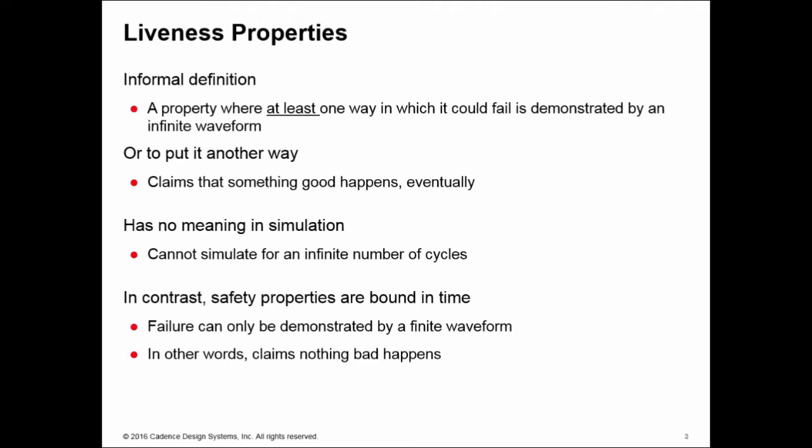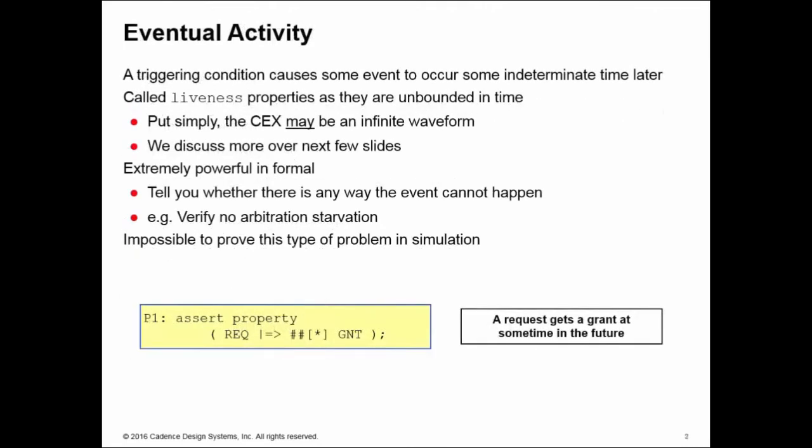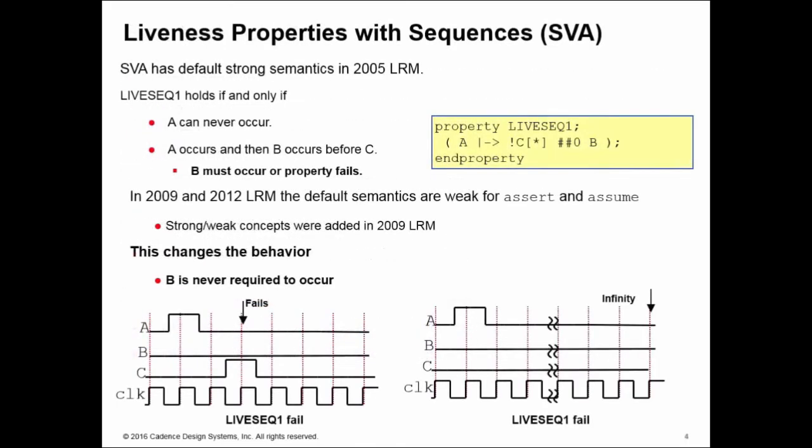The previous example we saw with a request, regarding the explanation of liveness and safety, is a bit too simplistic because it's just a liveness property with only one way in which you can fail. So we'll do a slightly more complicated example.